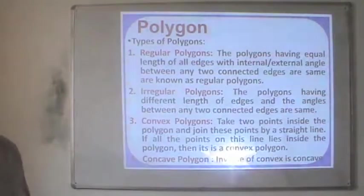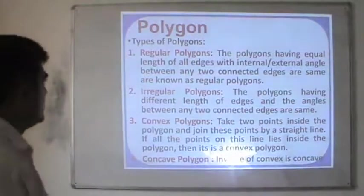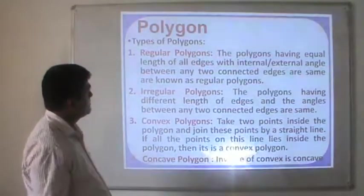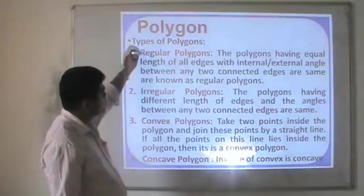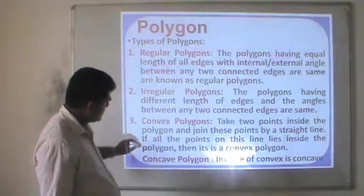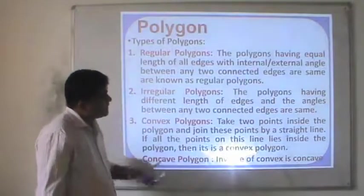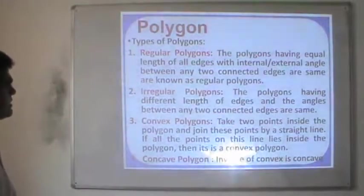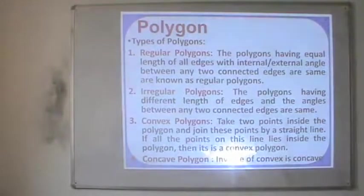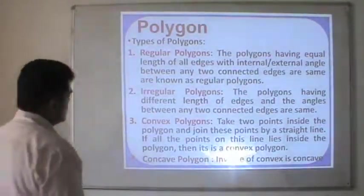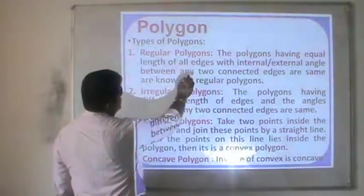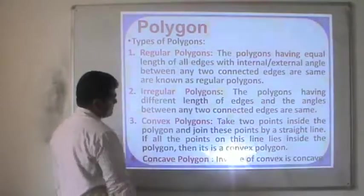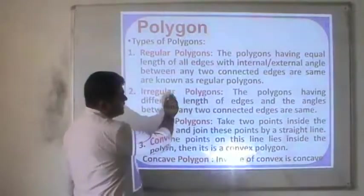So let us describe how many types of polygons are there. Polygons are basically four types: regular polygons, irregular polygon, convex polygon and concave polygon. Regular polygons are those having equal length of all edges, with internal and external angles between any two connected edges being the same. This is not the case in irregular polygons, which have different lengths of edges.